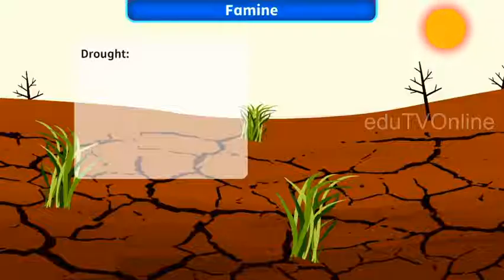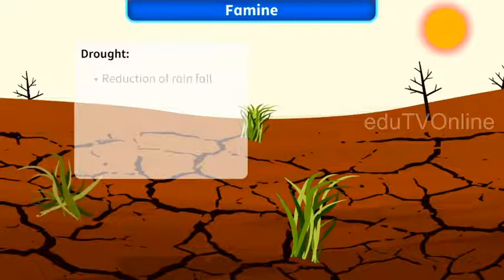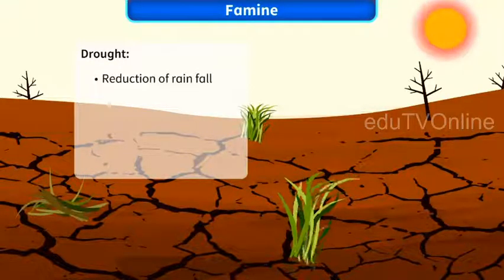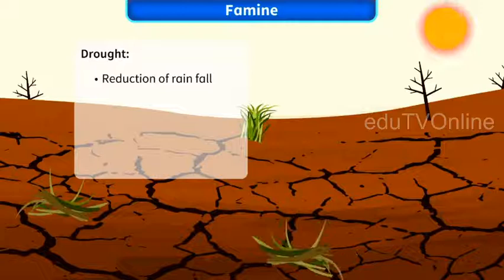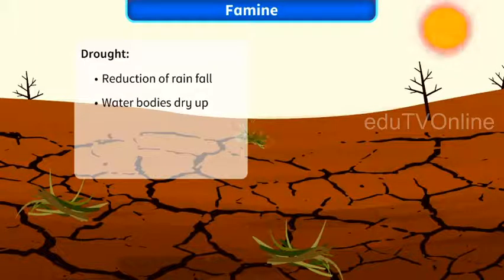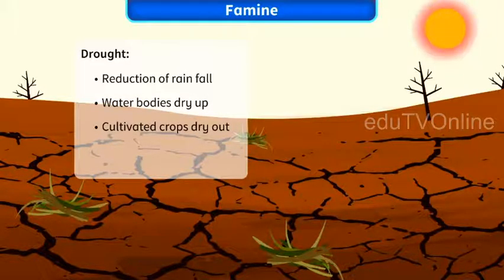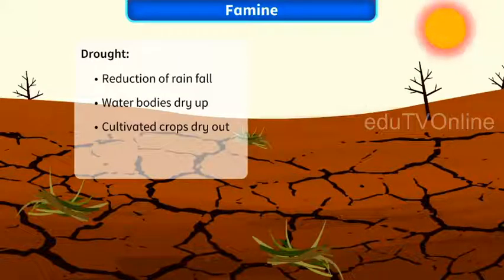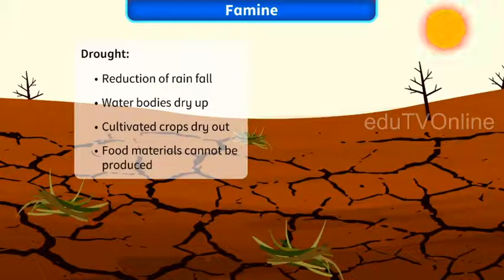Drought is a natural disaster. It occurs when the rainfall over a region reduces below a certain level. As a result, water bodies such as rivers or lakes dry up, which leads to severe reduction in the growth of cultivated crops. Due to limited crop cultivation, enough food materials cannot be produced, which leads to famine.